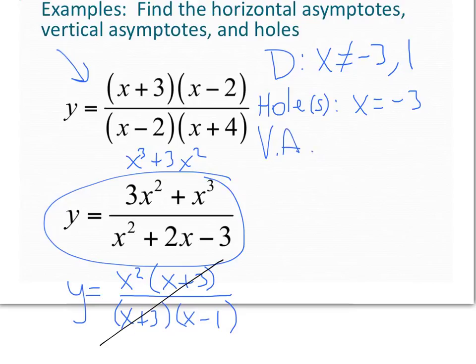Vertical asymptote. What's left in the denominator? Well, my x plus 1 is left in the denominator here. So that means I have a vertical asymptote of x equals positive 1.